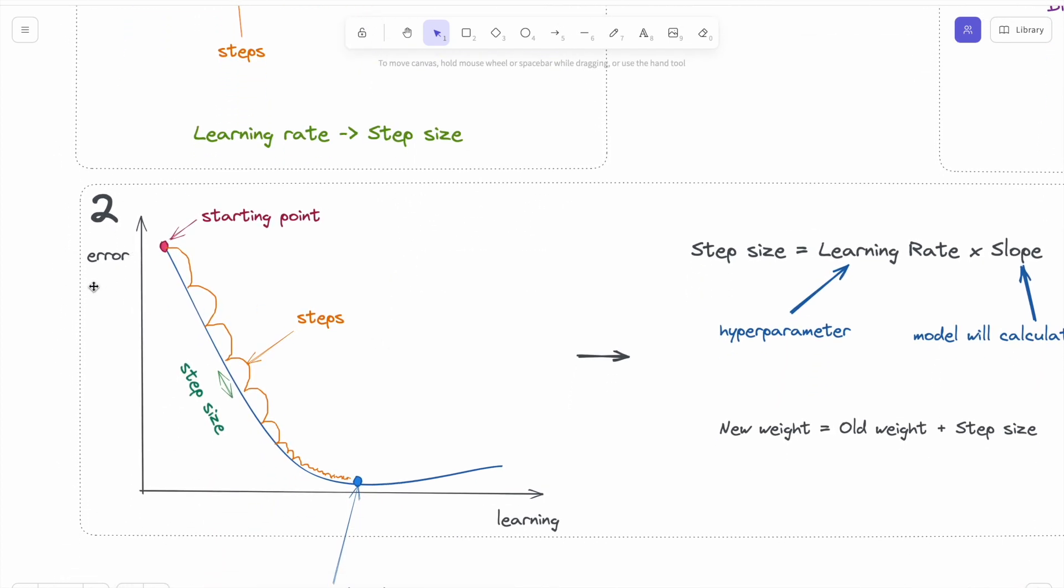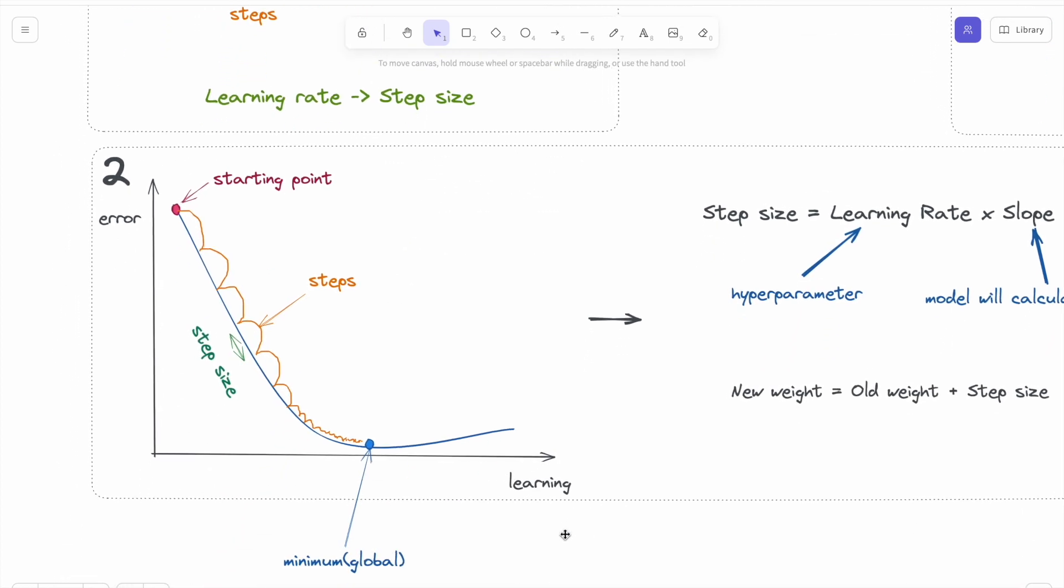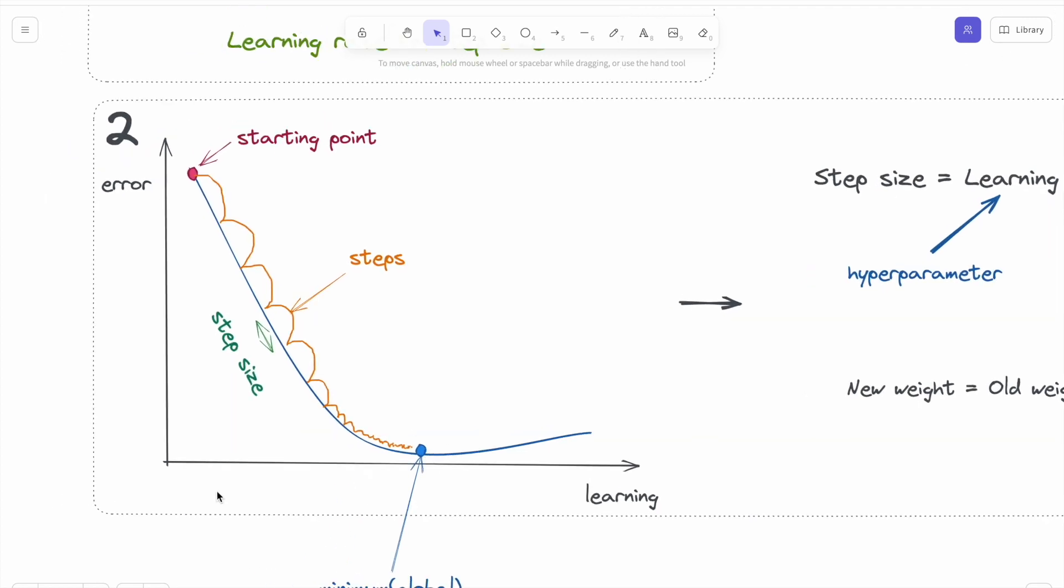First you need to understand the relationship between error and learning. Let's look at this graph closely. At the starting point of the learning progress, the model's error will be too high because we initialize the model's weights randomly.